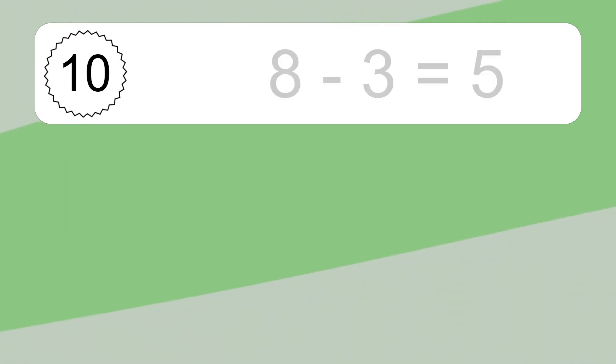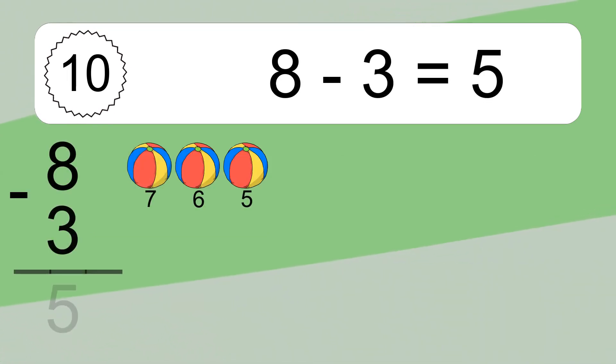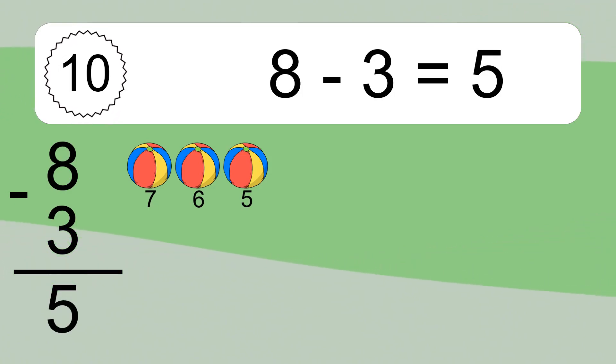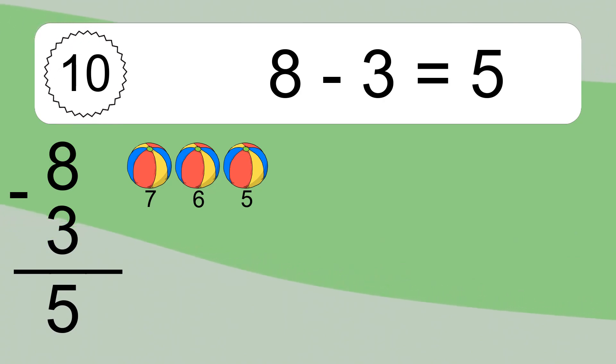8 minus 3 equals what? 8 minus 3 equals 5. Let's count it: 7, 6, 5.